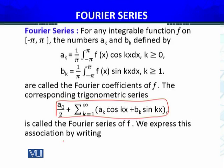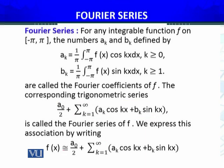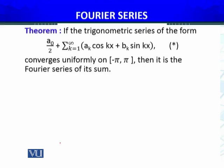We express this association by writing this. Now, here the equality sign — because equality will hold, we will see when equality holds for f(x). Because it is not necessary that this series converges to the value of f(x); that is why this is approximately equal. We have the theorem: if the trigonometric series of this form converges uniformly on minus pi to pi, then it is the Fourier series of its sum.